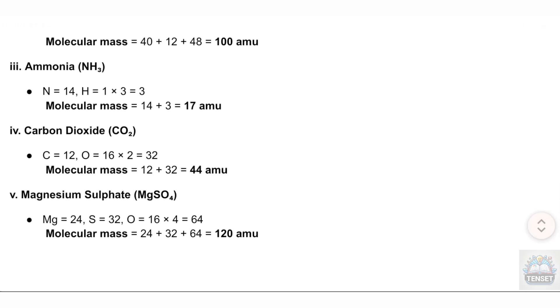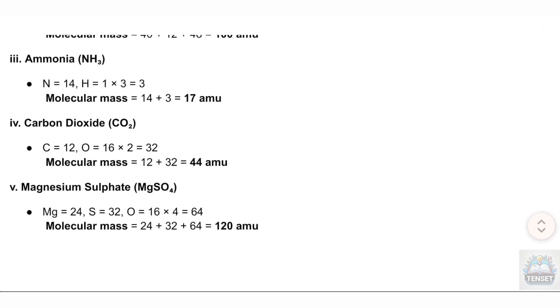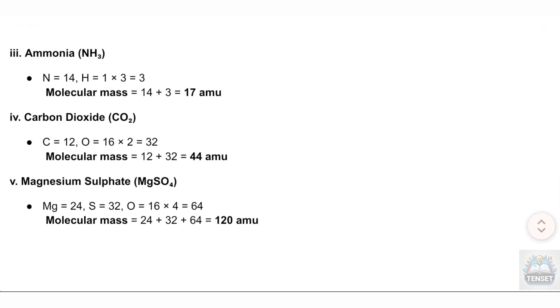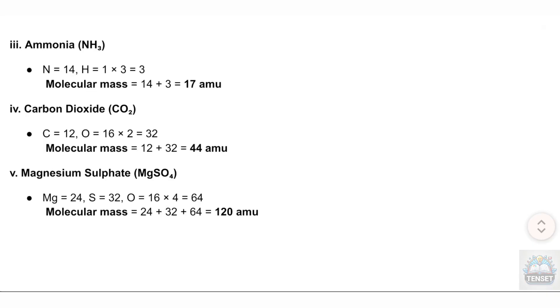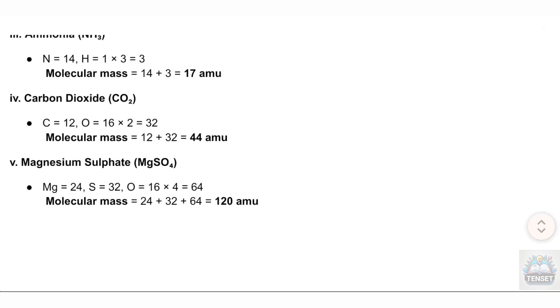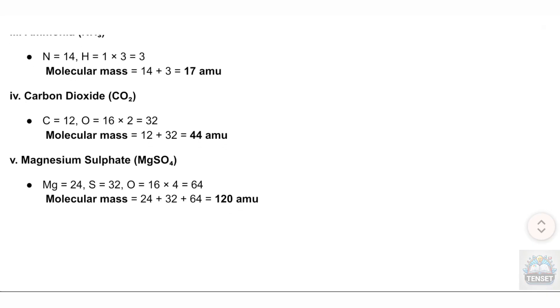V. Magnesium sulfate (MgSO₄): Mg = 24, S = 32, O = 16 × 4 = 64. Molecular mass = 24 + 32 + 64 = 120 atomic mass units.